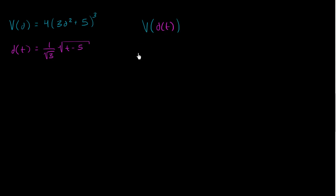This will give me volume as a function of time. So everywhere where I see a d, I should replace it with this description of how d varies with respect to time. So V(d(t)) is going to be equal to 4 times 3 times d squared.